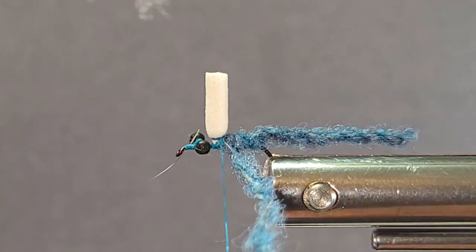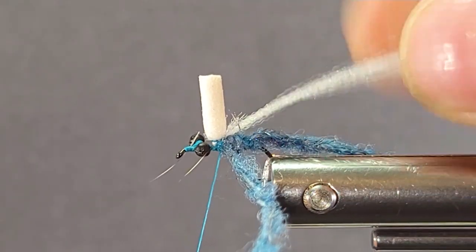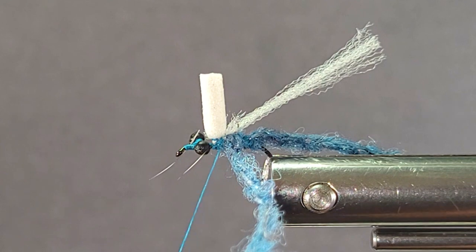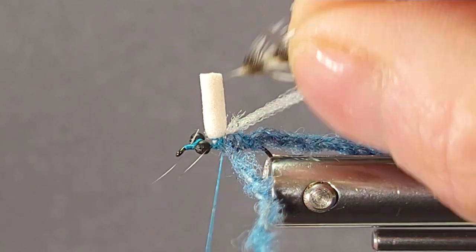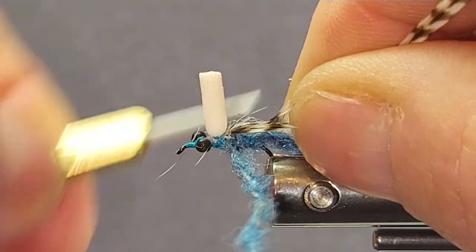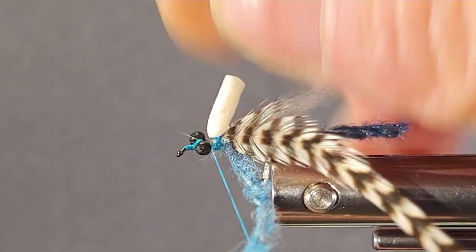I'll take my antron wing. Tie that in. Cut that off to the rear. And split that antron. Don't use a whole strand of it. It's too much. Now I can tie my hackle on top. There we go. Now we're back in sync.